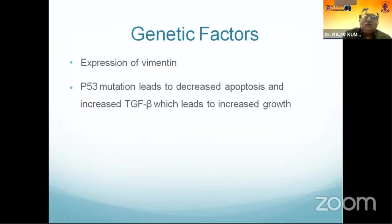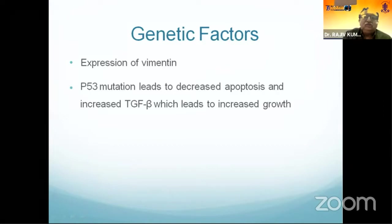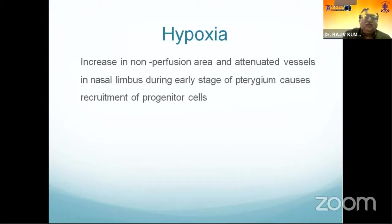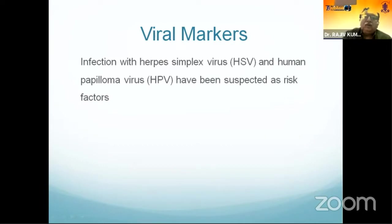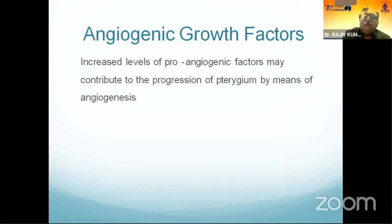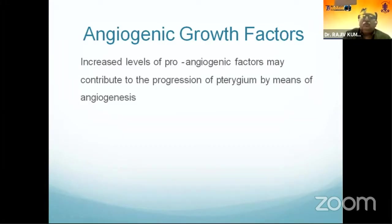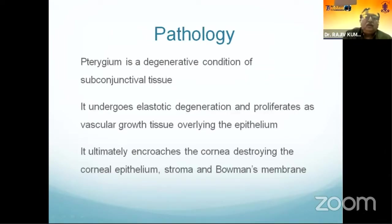Genetic factors are also involved, including expression of imatinib-related pathways. TP53 mutation leads to decreased apoptosis and increased TGF-beta, resulting in increased growth. Increased non-perfusion area and attenuated vessels in the nasal limbus during early pterygium cause recruitment of progenitor cells. Infection with herpes simplex virus and human papillomavirus have also been suspected. Additionally, angiogenic growth factors, particularly pro-angiogenic factors, are now considered among the most important factors in pterygium pathogenesis.